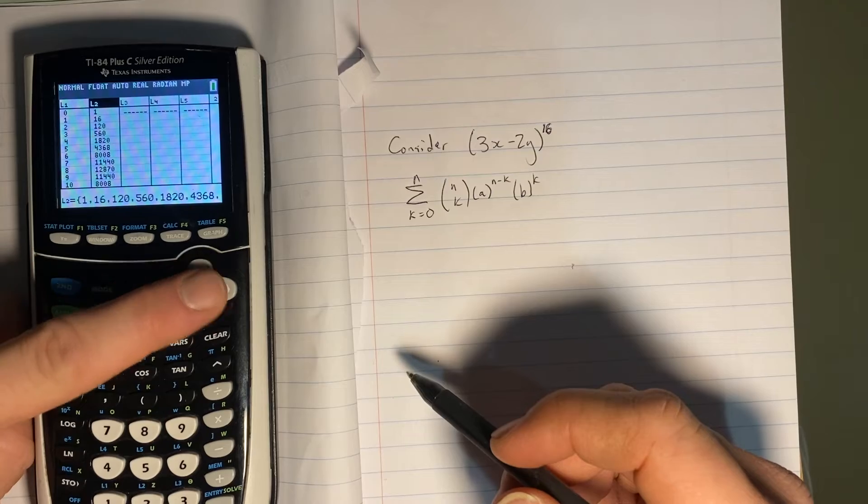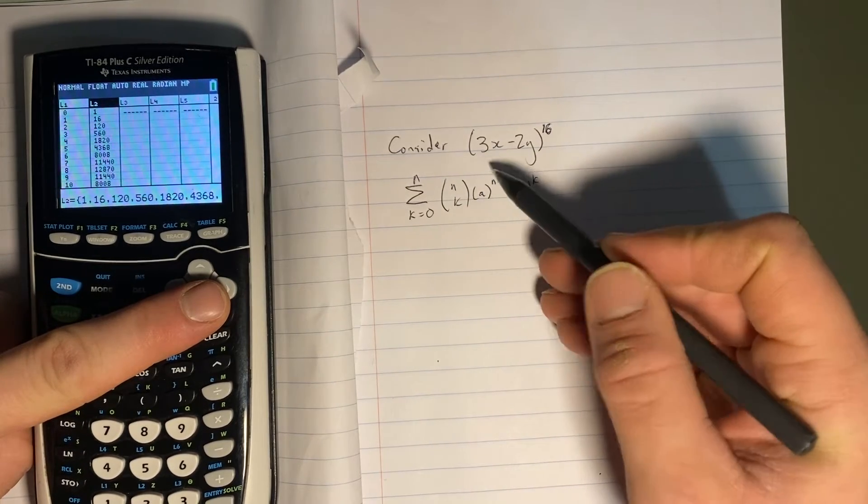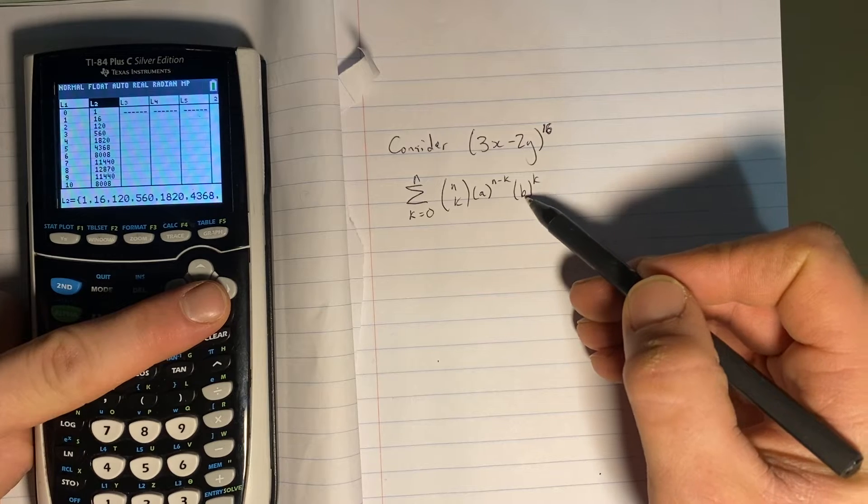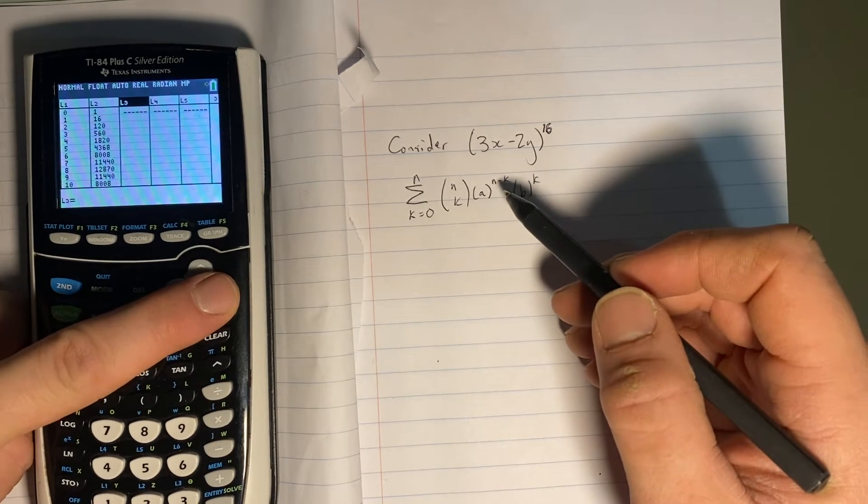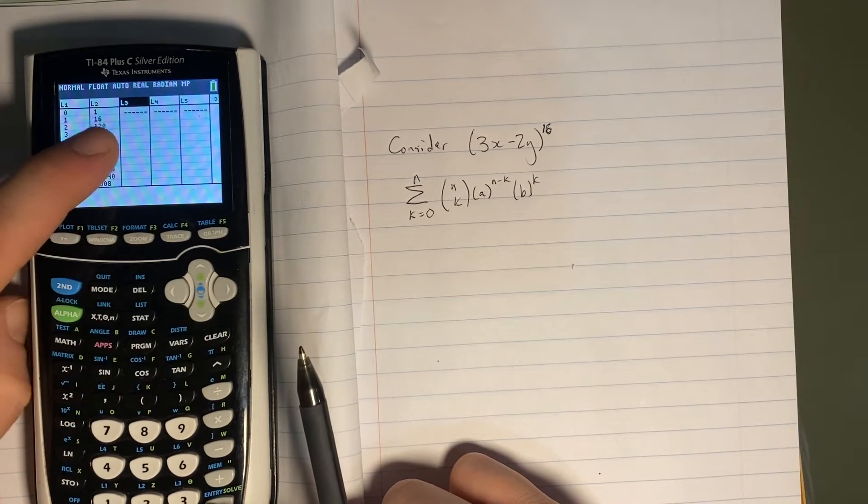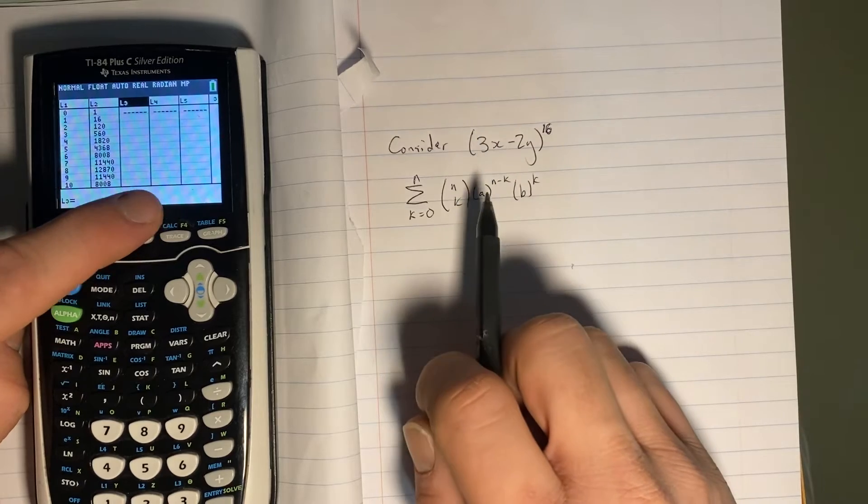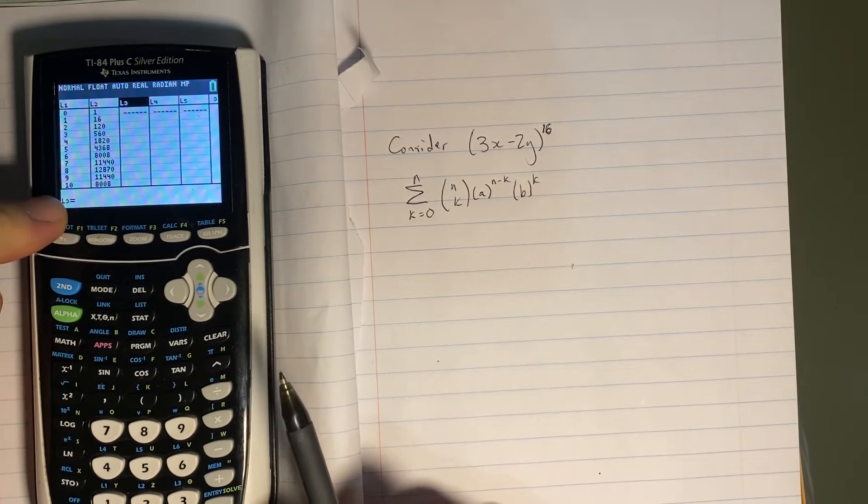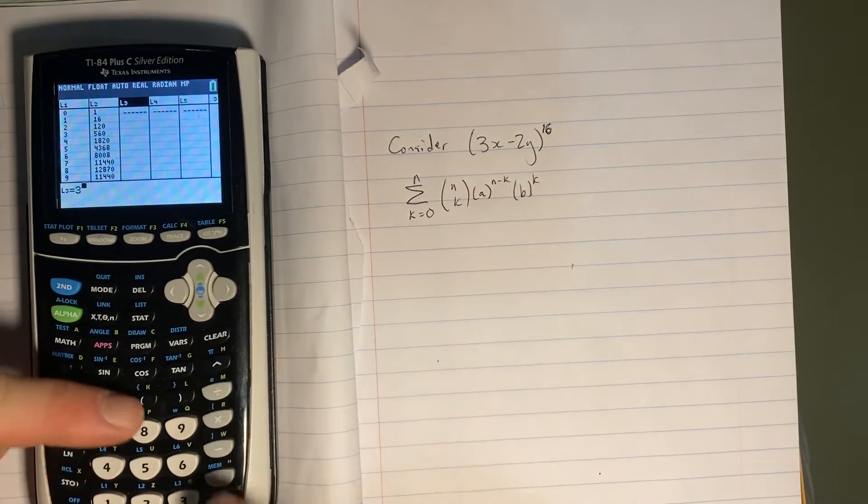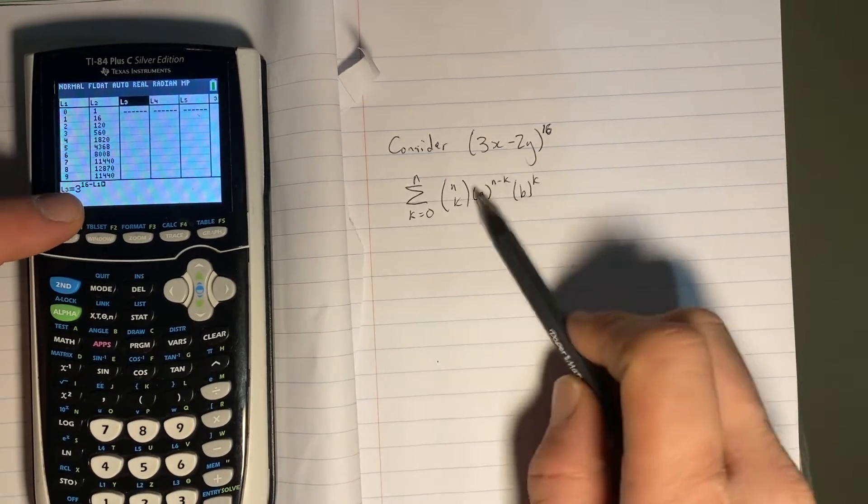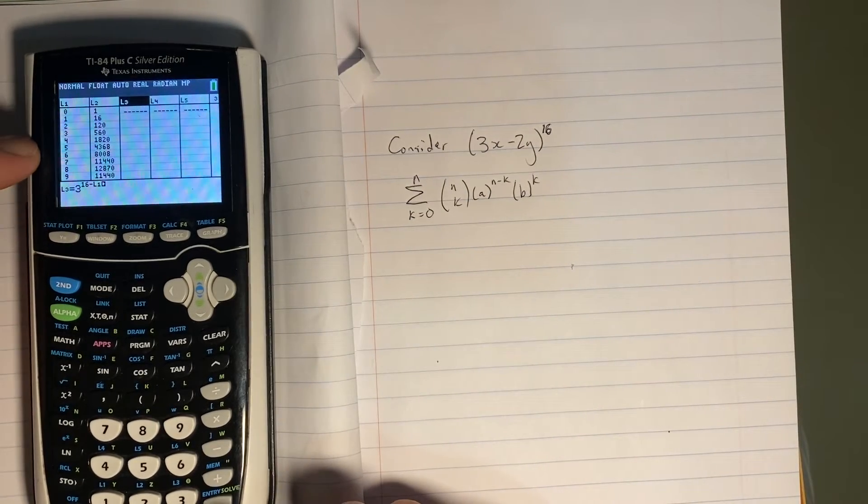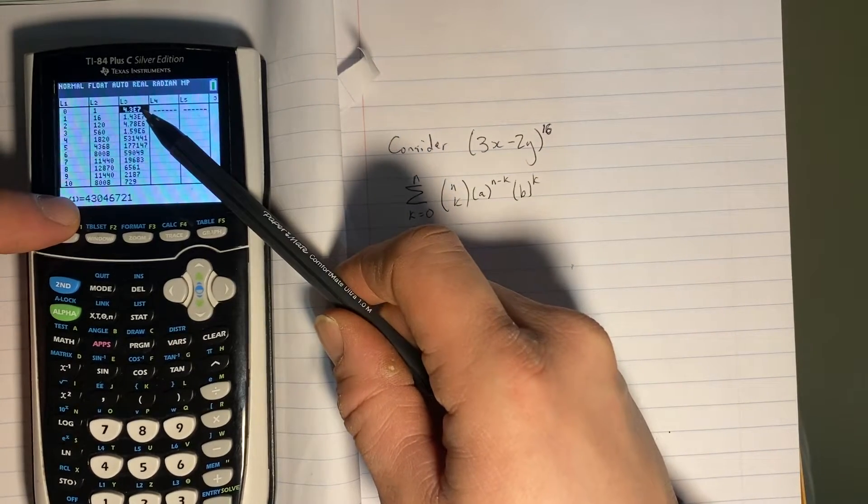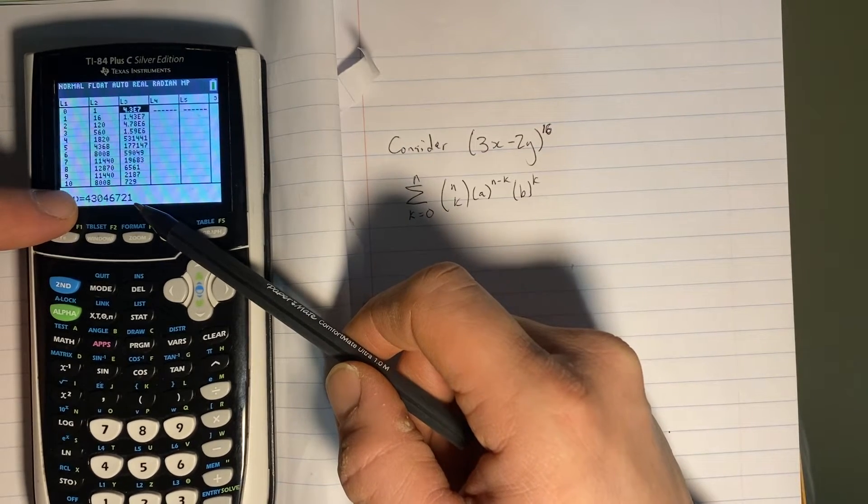But this 3 is also raised to the power N minus K in each term. And this negative 2 is also raised to the power B to the K. So it's raised to K as well. So I'm going to go ahead and type in in here under L3. I'm going to type in my coefficient raised to the power of the row that it's on. So watch how that works. So in L3, I hit enter. My coefficient is 3. I'm going to raise it to the power of 16 minus L1. Because remember, 16 is my value of N. And L1 is my value of K. And so those are all of my possible exponents and my values. And you'll notice in the table, it shows it in scientific notation. So with E7. But it actually gives me the value here in non-scientific notation.